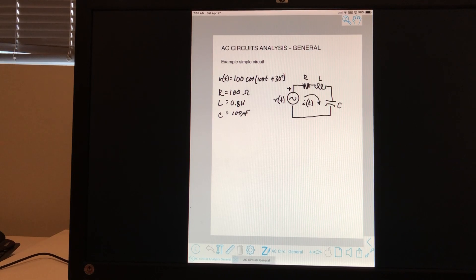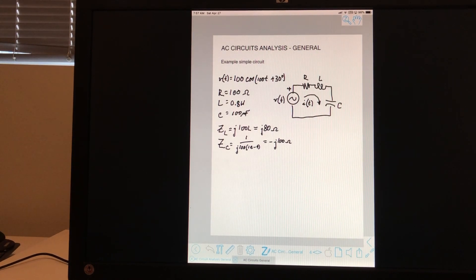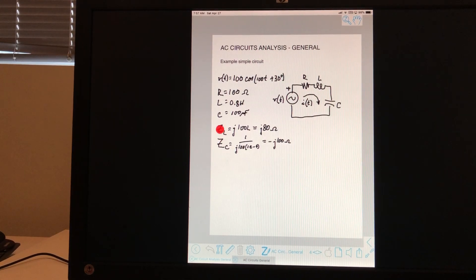So what do we do with that? Well, the first thing that we do is we compute the inductive and capacitive impedances, ZL and ZC. So J100L gives us 100 times 0.80 ohms.